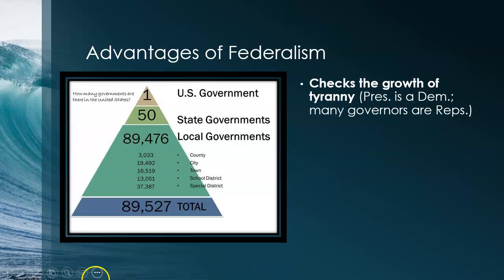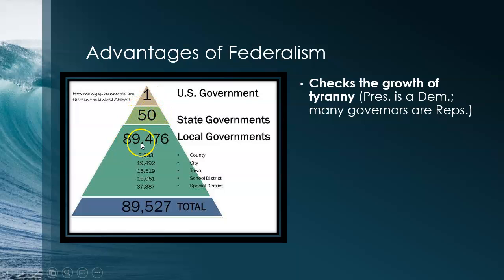Look at this diagram. There are a total of 89,527 different types of government in the United States. There's one United States federal government, 50 state governments, and over 89,000 local governments. That includes county governments, cities, towns, school districts, and special districts.